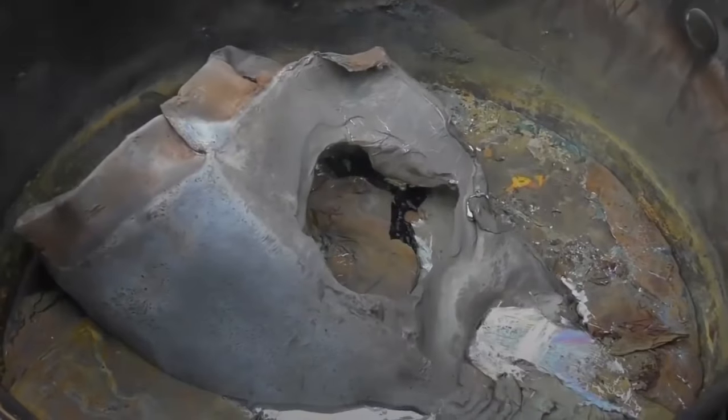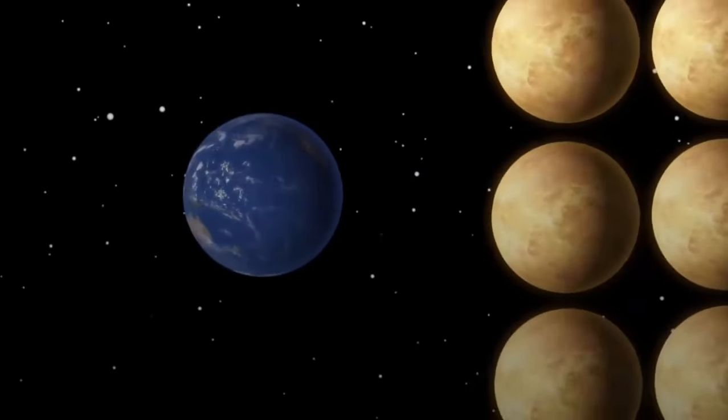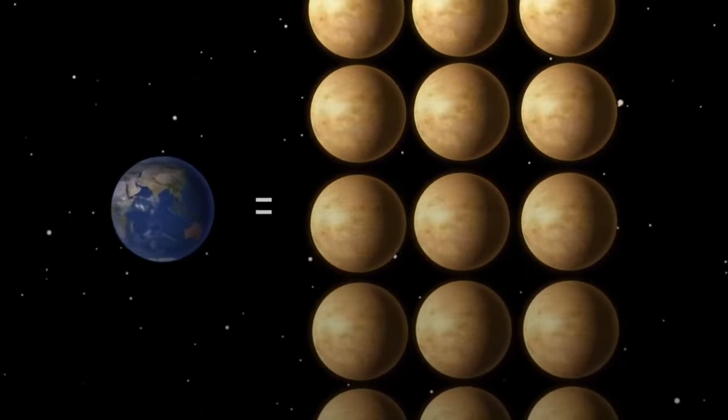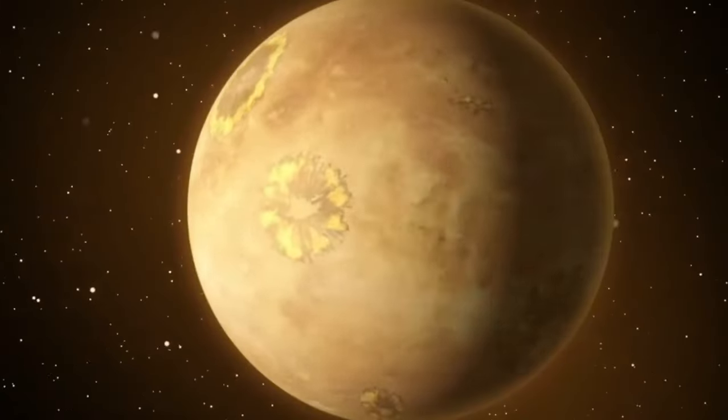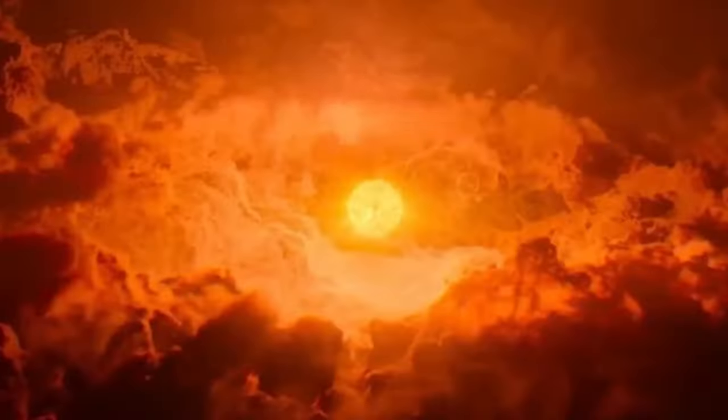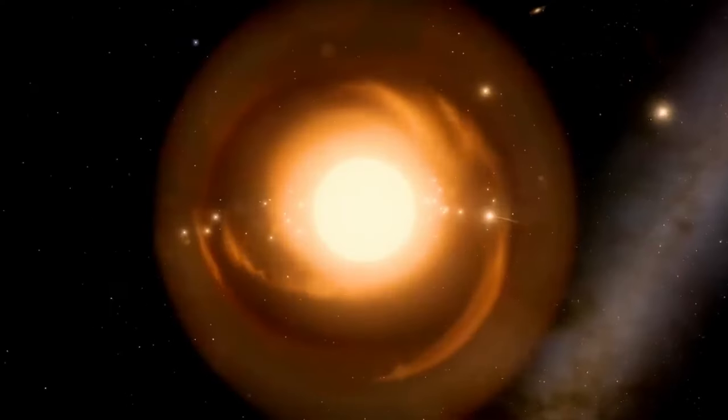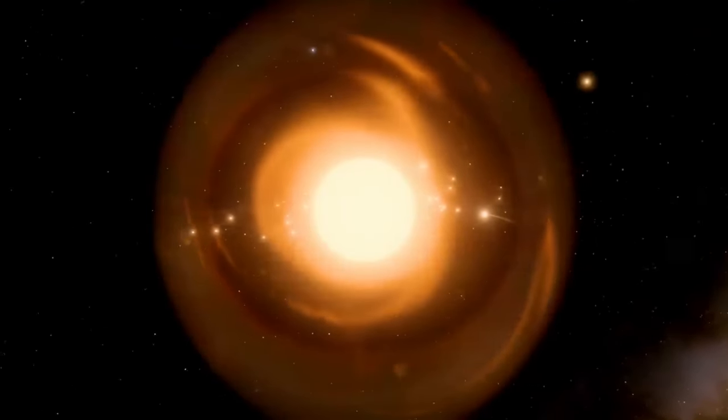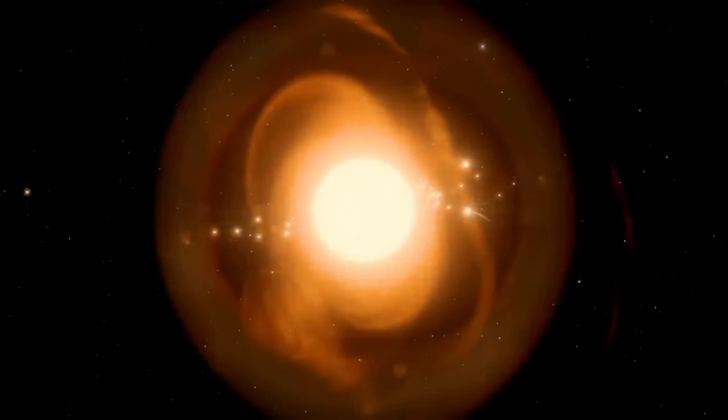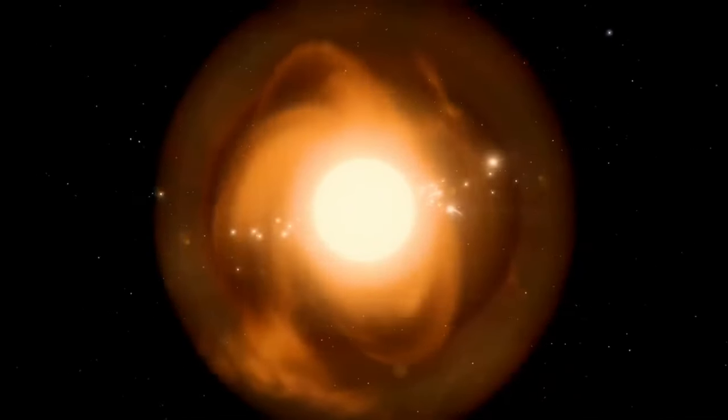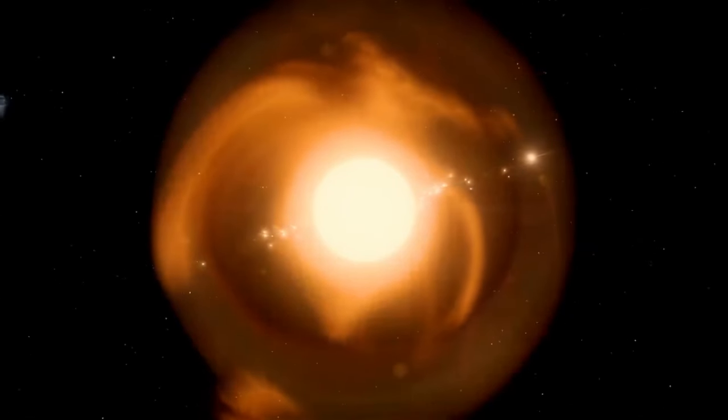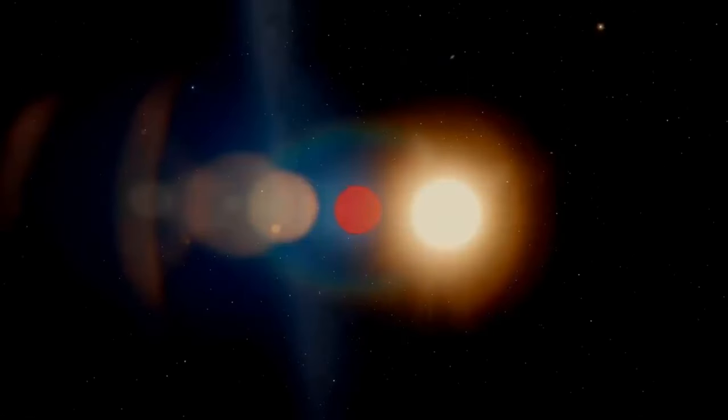More recently, the James Webb Telescope uncovered a planet that is remarkably similar in size to Earth. This exoplanet orbits a small red star known as LHS 475b, situated approximately 40 light-years away from us. As the James Webb Telescope continues to discover more planets and examine their atmospheres, some researchers believe we are closer than ever to the prospect of finding life.